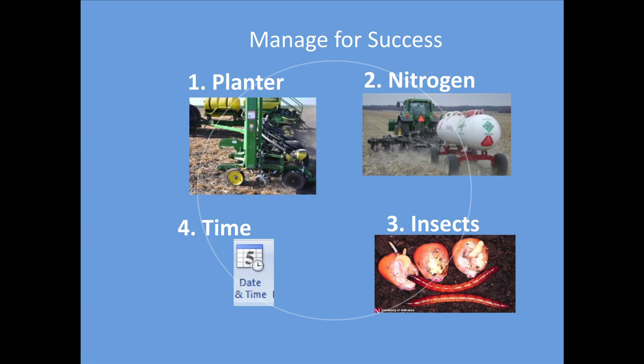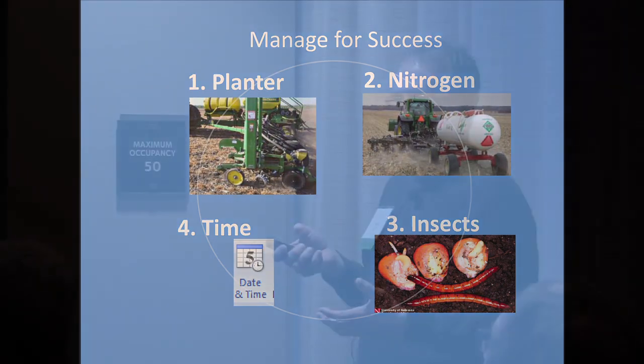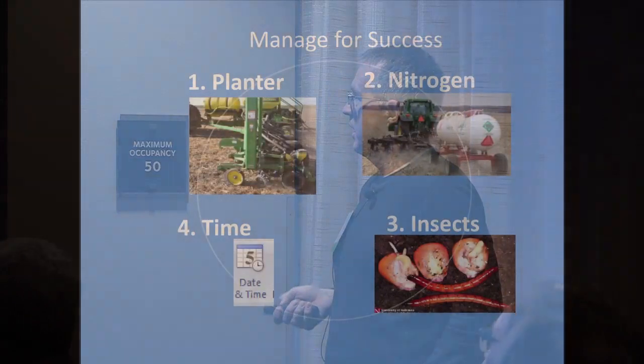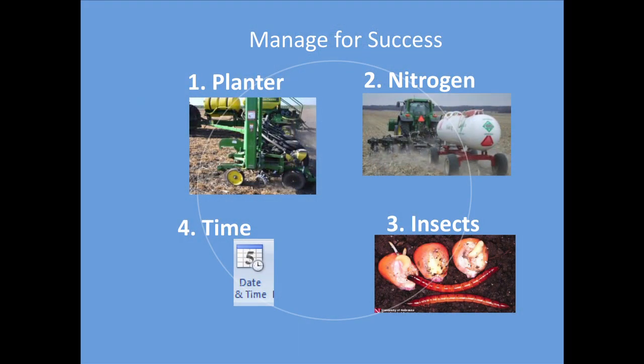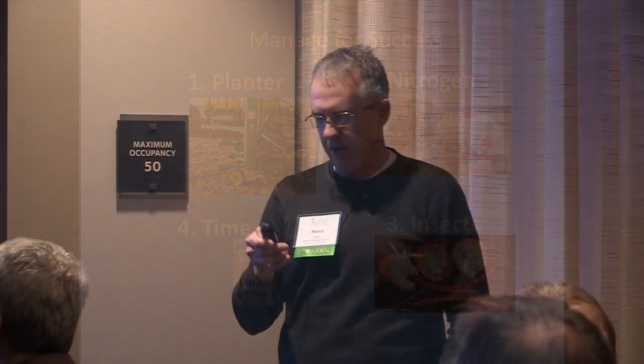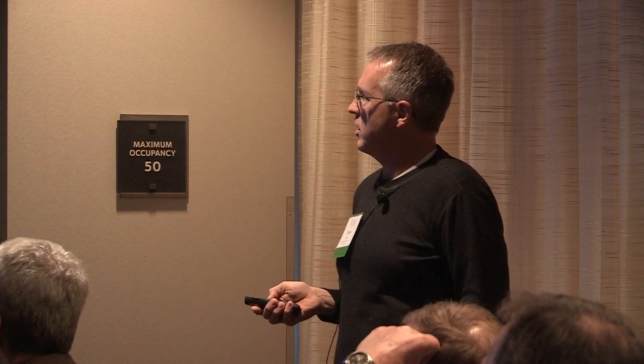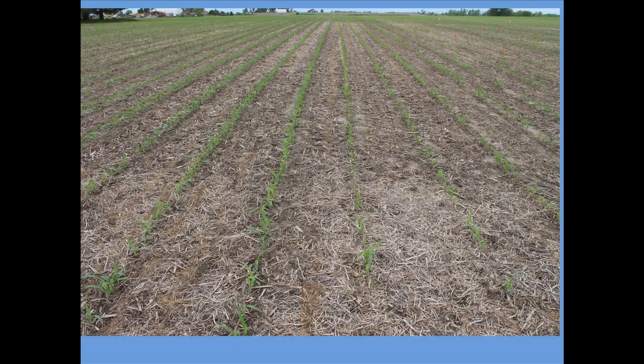A lot of farmers come to me about train wrecks with cereal rye, and I try to break it down: make sure you've got that planter set right and manage your nitrogen differently. With the carbon-nitrogen ratio, corn is competing for nitrogen as the rye decomposes, so we've got to learn to manage that. I think we can start to reduce nitrogen use over time. Insects are still a problem — we use insecticide — but maybe with more diversity we won't need it. The hardest thing is it just takes time for that soil profile to develop pore space, and a lot of farmers hit train wrecks because the soil hasn't converted fast enough.